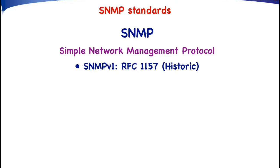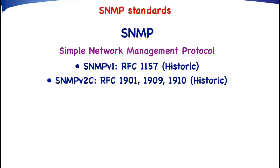These community strings are transported over the network in an unencrypted way. For that reason, the IETF started in the early 90s to work on a second version of SNMP — SNMP version 2. Unfortunately, the IETF could not agree on an improved security mechanism. Therefore, SNMP version 2 still has the same community-based security mechanism as SNMP version 1. That is the reason why SNMP version 2 is called SNMP version 2-C — the C stands for community.